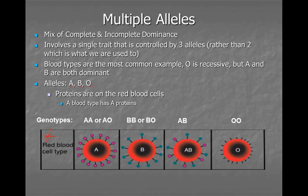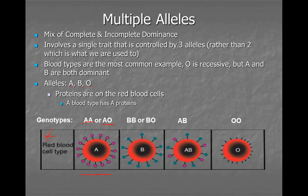A blood has A proteins. B blood has B proteins. AB blood has A and B proteins. Type O blood does not have any proteins. There is a possibility of six genotypes. Type A blood can be homozygous AA or AO, and the reason is A is dominant to O. Type B blood can be homozygous BB or BO because, again, type B blood is dominant to O.